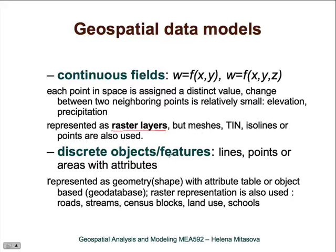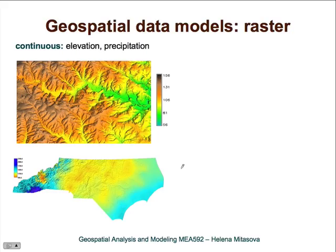Discrete objects are usually represented as a vector model, but they can also be represented as raster, as we will show soon. Here is an example of a continuous field represented as raster. The first example is probably the most common — elevation data. The second example is precipitation data draped over elevation data: typical continuous fields where values change from point to point.